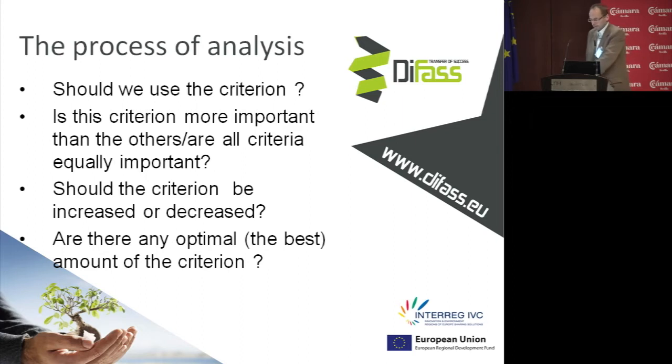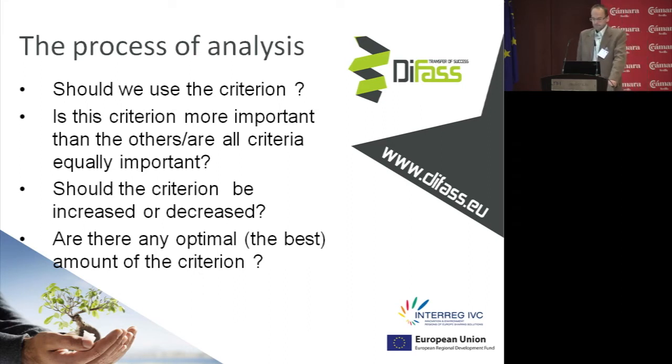I suppose you have some ideas about these criteria, and I'm interested in your opinion. Should we use all these criteria or maybe only some of them? For example, one thing I think is difficult is interest rates. In my opinion, we should decrease the interest rates — of course, if we are talking about microcredit funds.